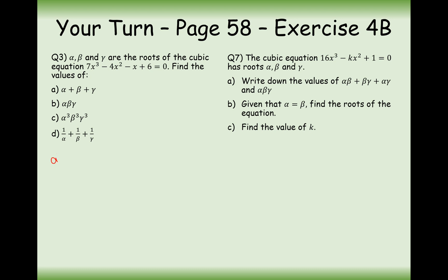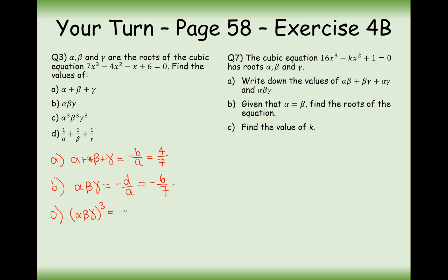Let's go through the answers. For part (a): α + β + γ = −b/a. Here b = −4, so it's 4/7 (double negative). For part (b), the triple: αβγ = −d/a. That gives −6/7. For part (c), α³β³γ³ = (αβγ)³ = (−6/7)³ = −216/343.